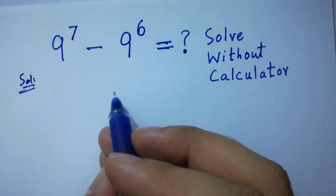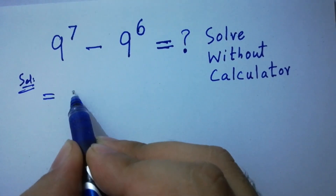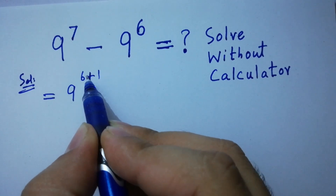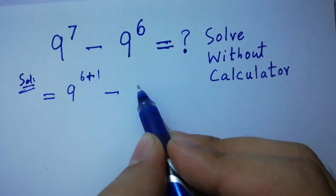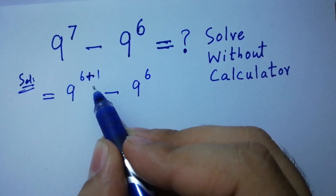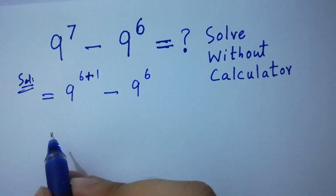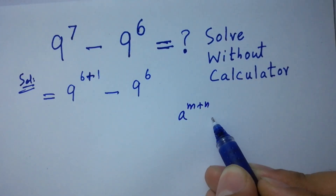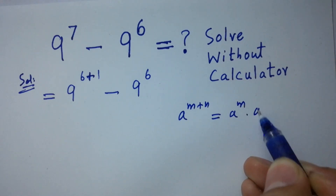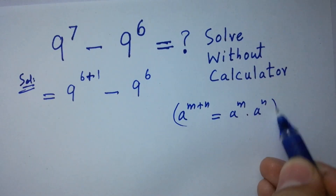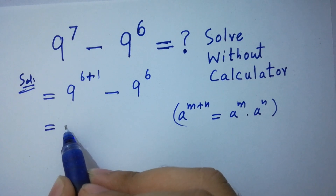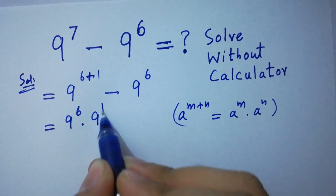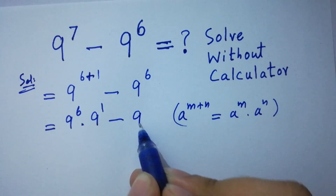Here, 9 to the power 7 can be written as 9 to the power 6 plus 1, since 6 plus 1 is 7. As we know, a to the power m plus n equals a to the power m times a to the power n. So it becomes 9 to the power 6 times 9 to the power 1, minus 9 to the power 6.